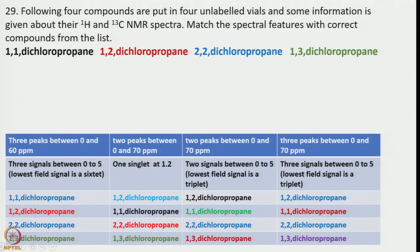I have a problem here: the following 4 compounds are put in 4 unlabeled vials and some information is given about their 1H and 13C NMR spectra. We have to identify the appropriate molecules. The 4 molecules are all chloro derivatives of propane: 1,1-dichloropropane, 1,2-dichloropropane, 2,2-dichloropropane, and 1,3-dichloropropane.